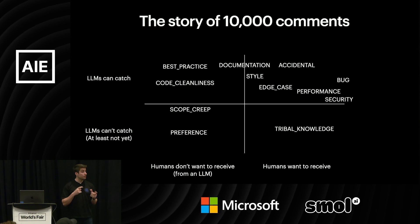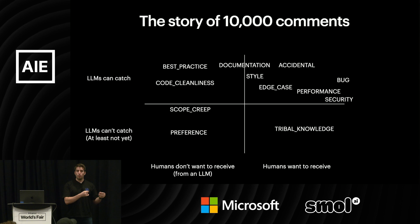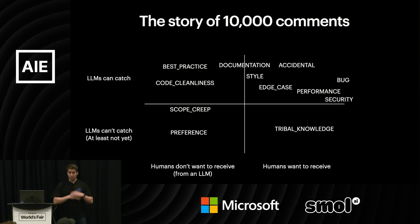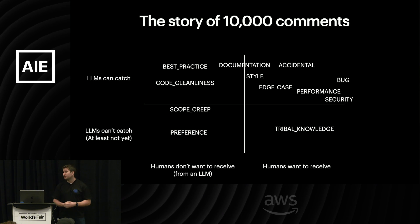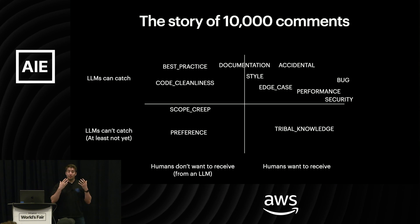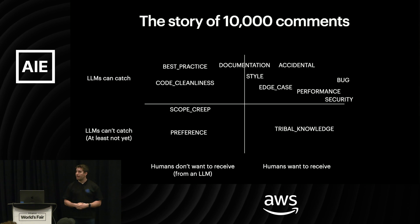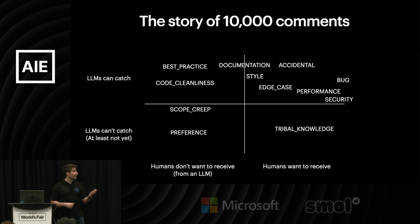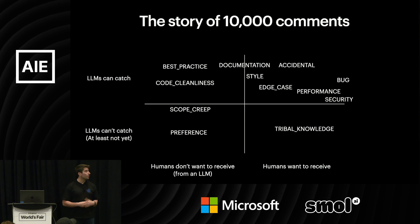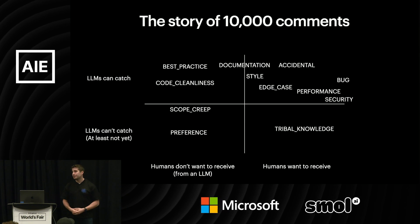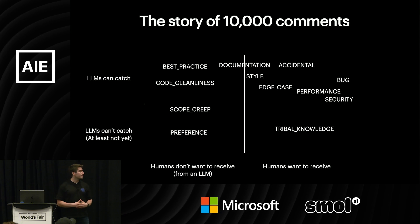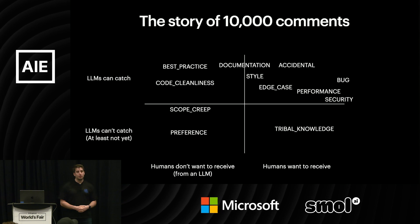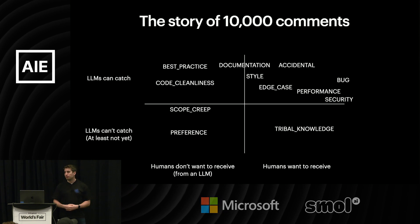Tribal knowledge is a class of comment you'll see a lot in PRs: 'Hey, we used to do it this way — we don't do it that way anymore because of blank.' That documentation doesn't exist written down; it exists in the heads of your senior developers. That's wonderful, but it's really hard for an AI to mind-read that. On the left side, where LLMs can catch it but humans don't want to receive, are code cleanliness and best practices — things like: 'Comment this function,' 'Add tests,' 'Extract this type out,' 'Extract this logic out into a function.'